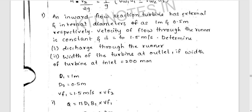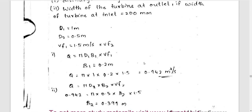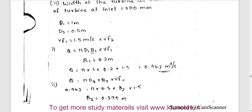Inward Flow Reaction Turbine problem: the internal and external diameters are 1m and 0.5m respectively. The velocity of flow through the runner is constant and equals 1.5 meters per second, so Vf1 equals Vf2. Determine the discharge through the runner. The width of the runner at the inlet is 200 mm. Applying the formula Q equals Pi D1 B1 into Vf1.